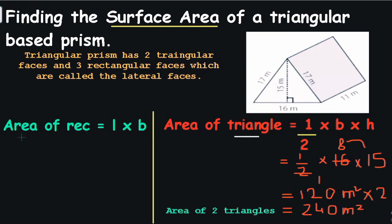Now let's move on to the area of rectangles. This shape is made up of 3 rectangular faces which are also called the lateral faces. This isosceles triangle has 2 same side measurements — 17 meters and 17 meters — and the base is 16 meters.